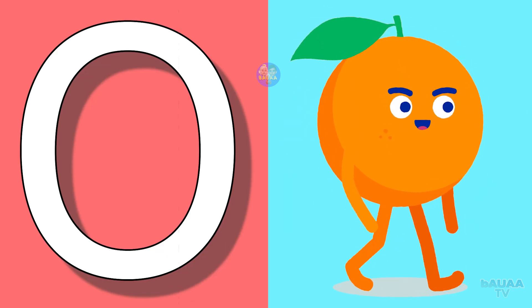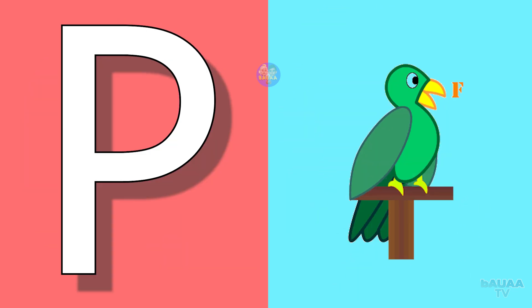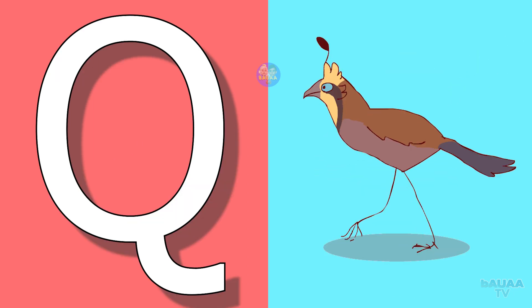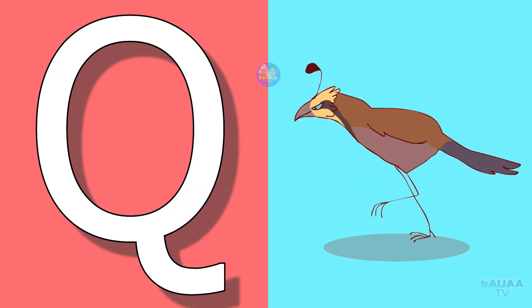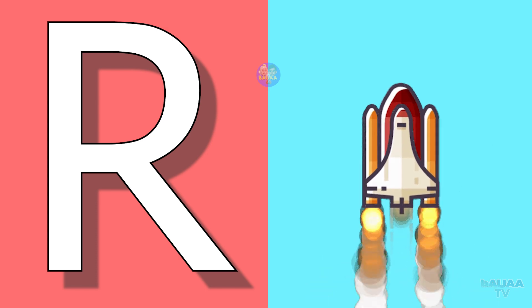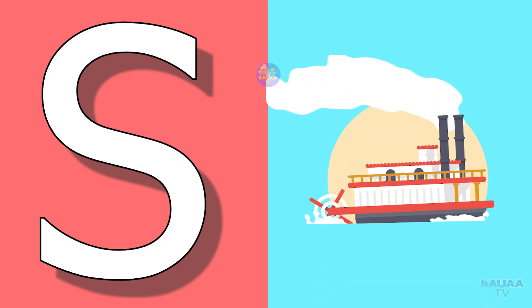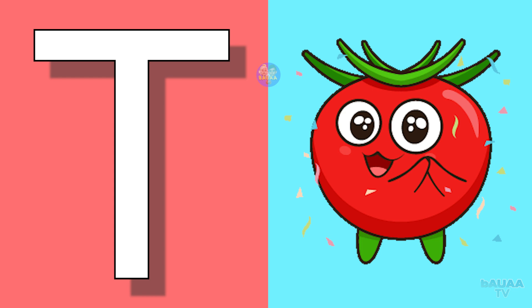O for orange, P for parrot, Q for quill, R for rocket, S for sheep, T for tomato.